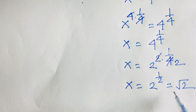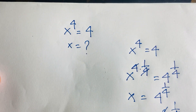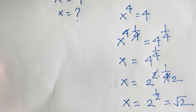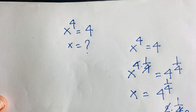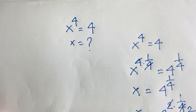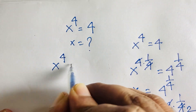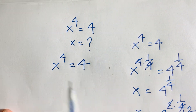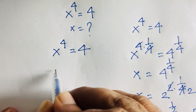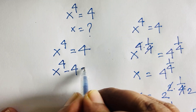This is right, but we need x to the power 4, so we need 4 values. But we will find only 1 value here. So how to solve this question properly? If you want to solve this question, first of all, x to the power 4 is equal to 4 — that is our question. Then this equation becomes x to the power 4 minus 4 is equal to 0.